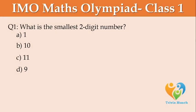What is the smallest 2-digit number? Option A: 1, Option B: 10, Option C: 11, Option D: 9.